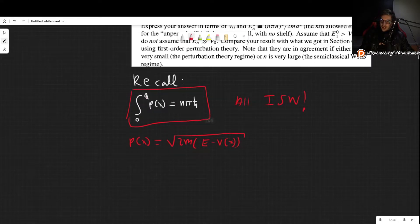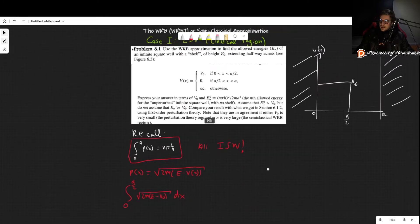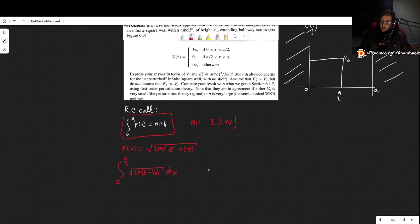So what is our potential? Well, we are integrating from 0 to A, so we need to consider that. We integrate from 0 to A over 2 where our potential has one value. In this interval, this is square root of 2M(E minus V0), because between 0 and A over 2 we have this potential right there. But between A over 2 and A we don't have any potential—it is 0. So for that reason we simply have square root of 2ME, and this has to be equal to N pi H bar.